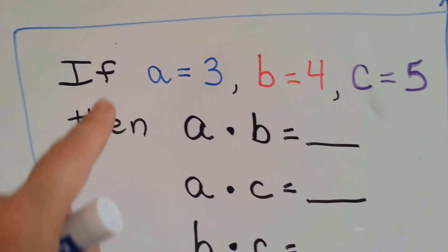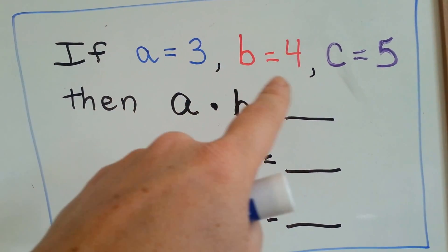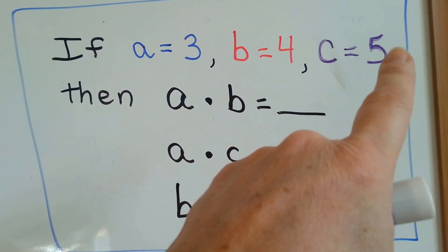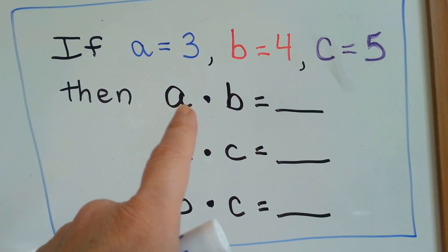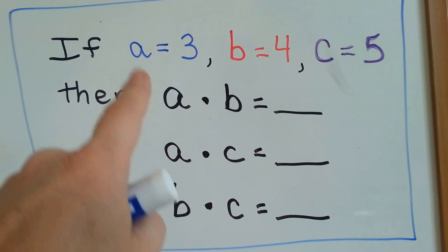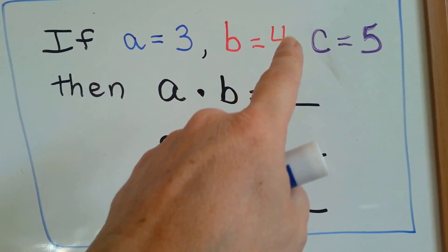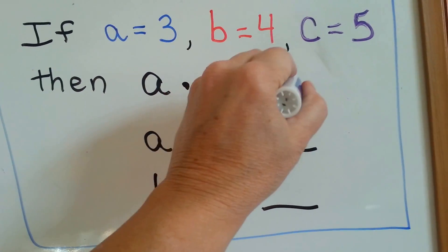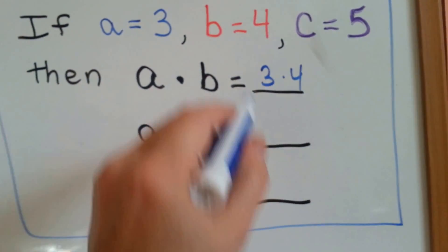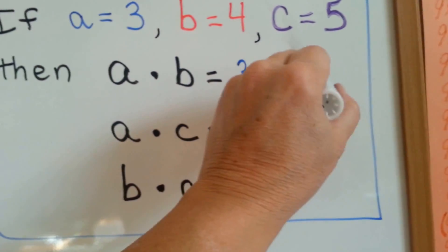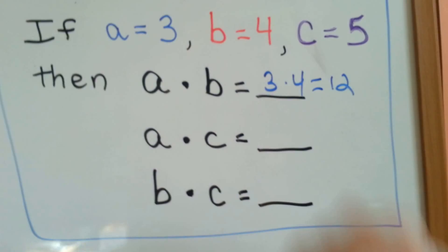So, if a is equal to 3 and b is equal to 4 and c is equal to 5, what would be a times b? a times b. It would be 3 times 4. See that? 3 times 4 is 12. So, a times b is 12.